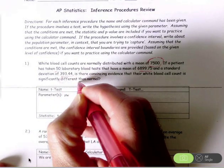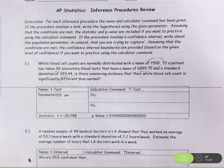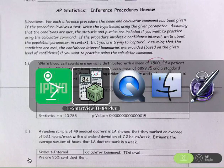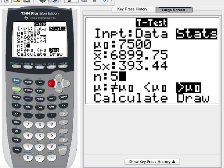So we're looking for evidence that the white blood cell count is significantly different than normal. So that is a two-sided or a two-tailed alternative. We want to choose the not equal to option.